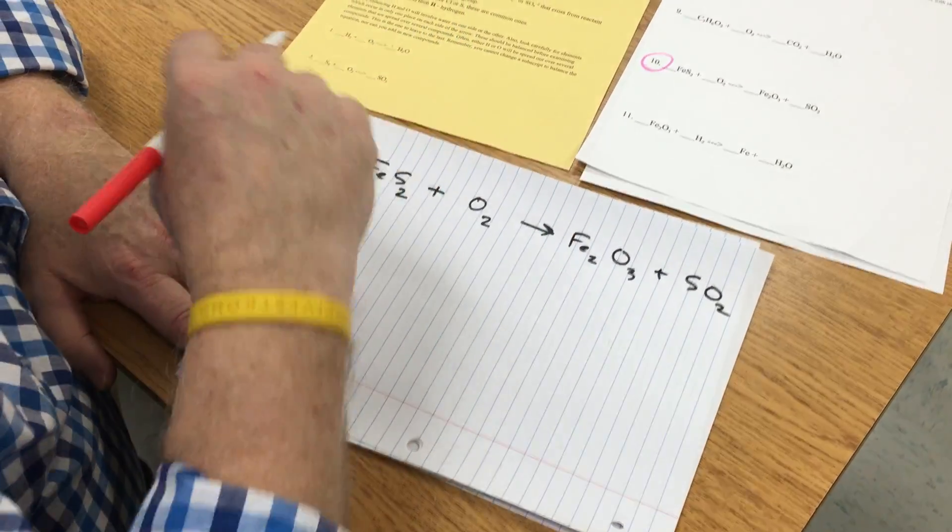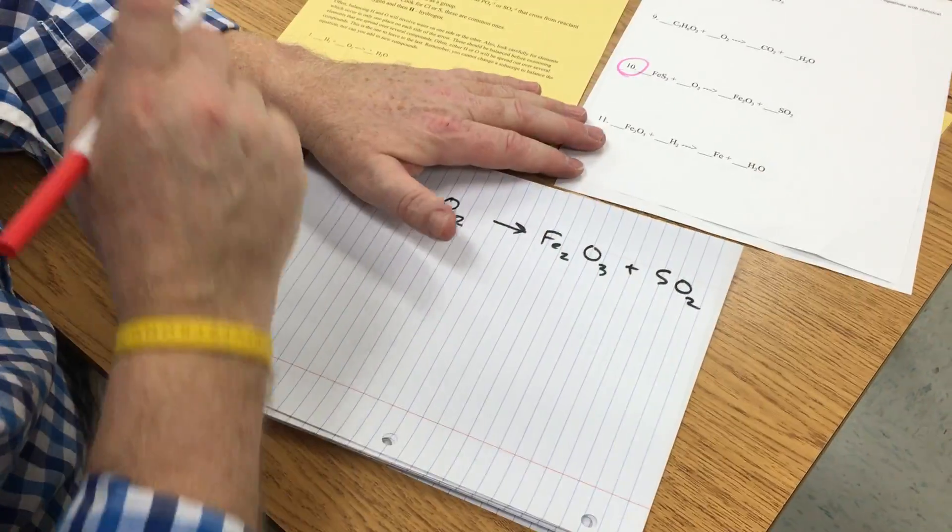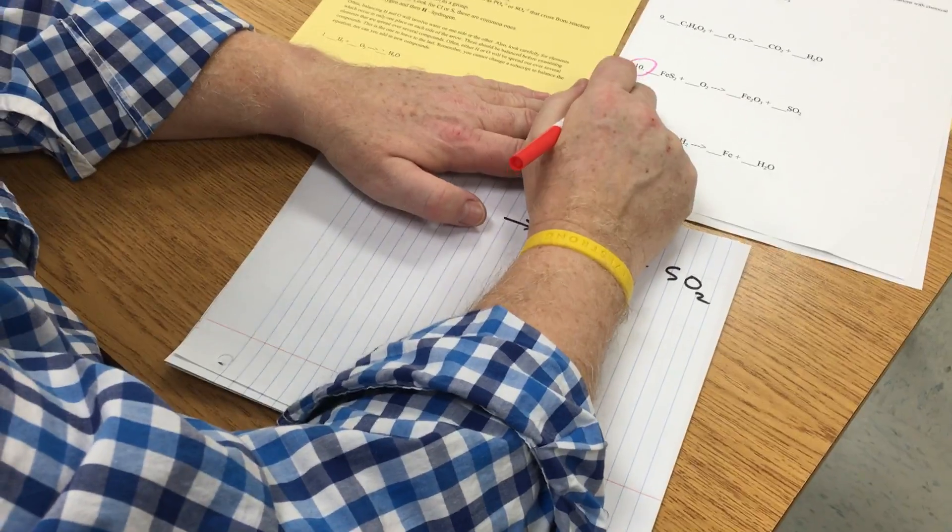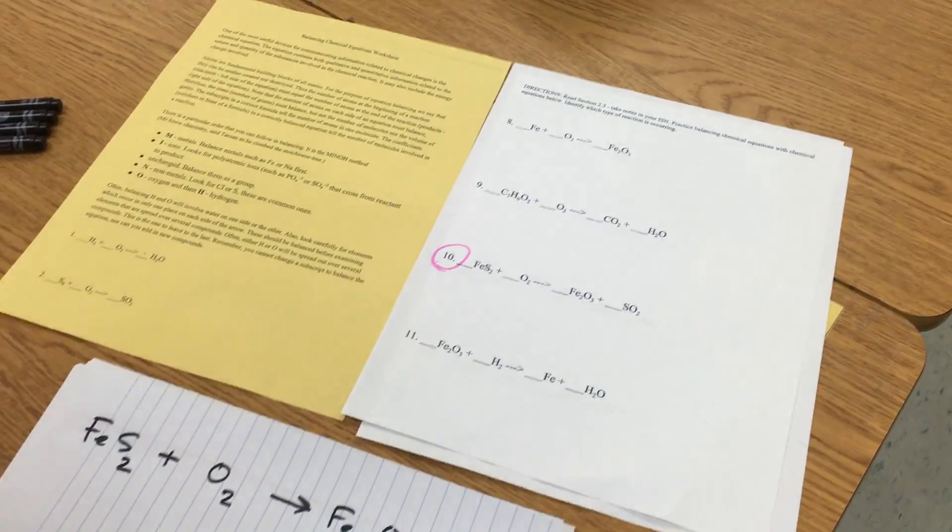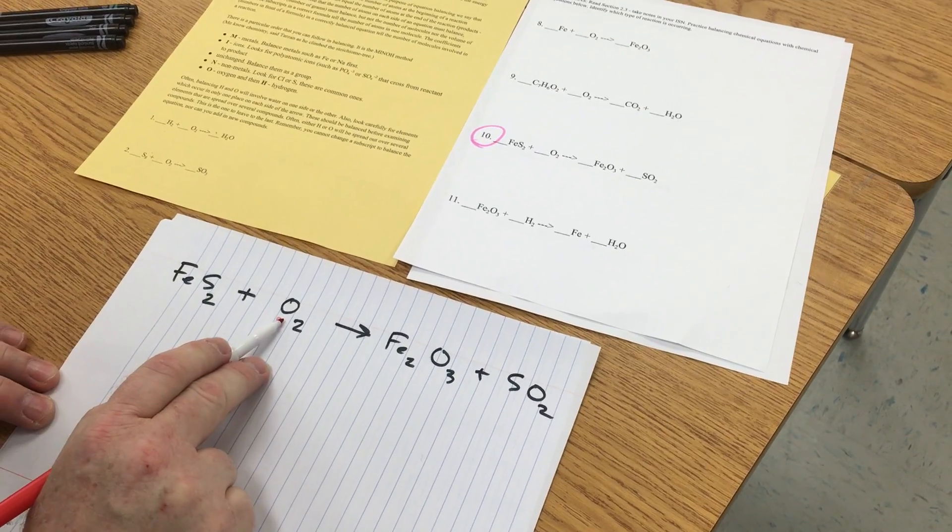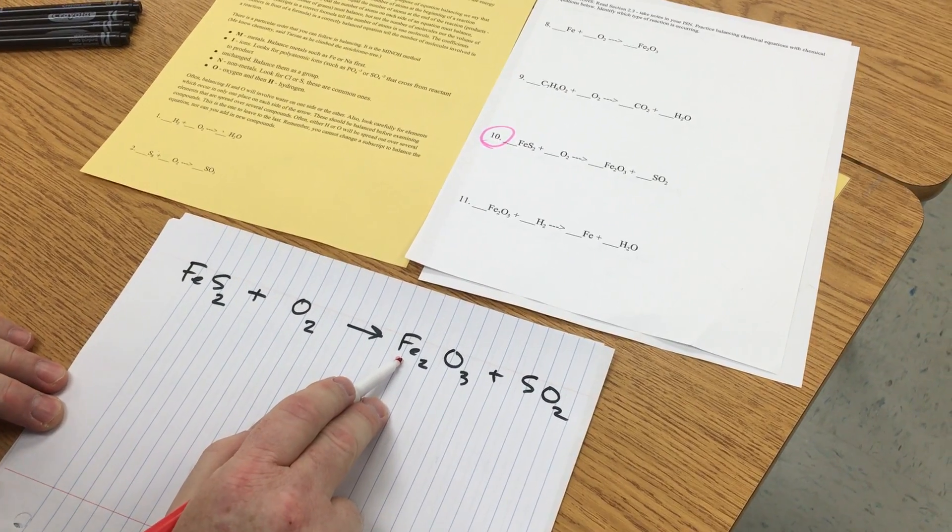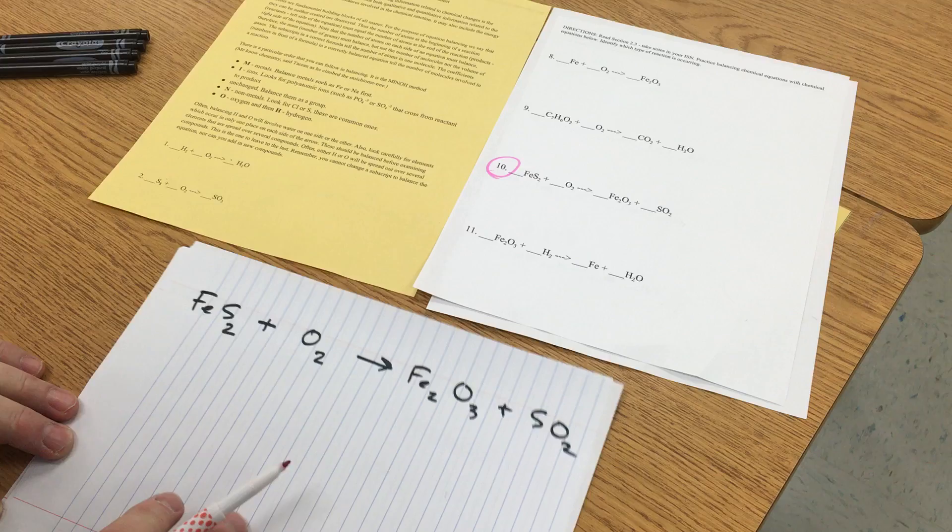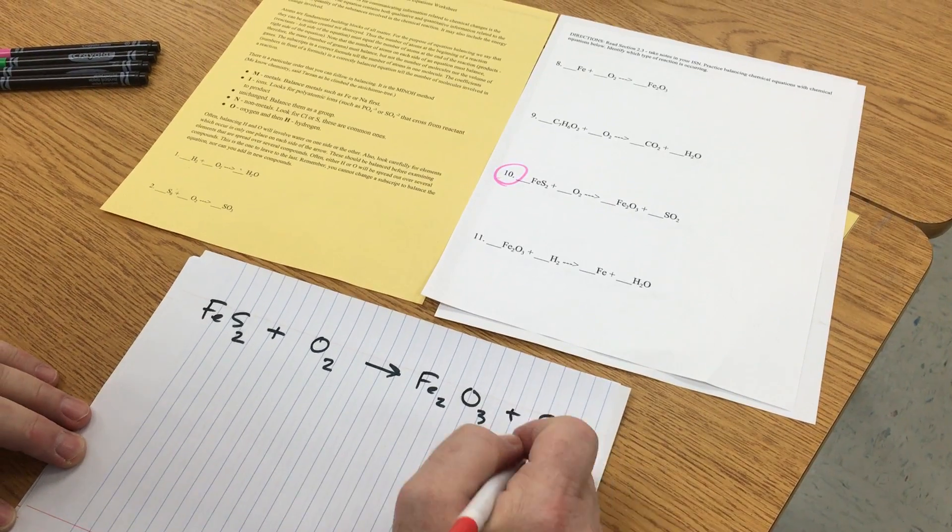Welcome to chemical balancing help. I have a mentor in, so we're going to solve this one, number 10. It's a little difficult. I've already written it down. It's iron sulfide plus oxygen gives us iron oxide and sulfur dioxide.